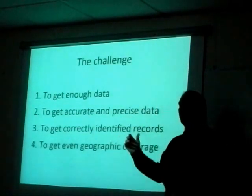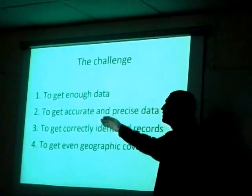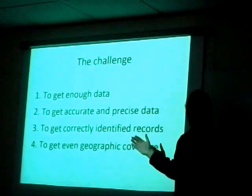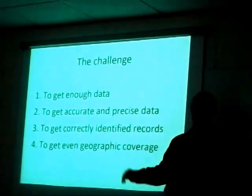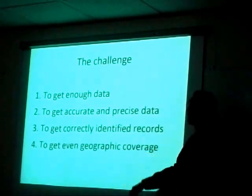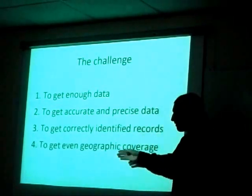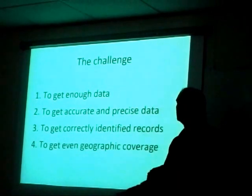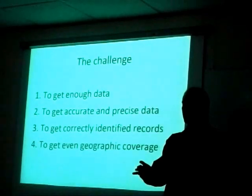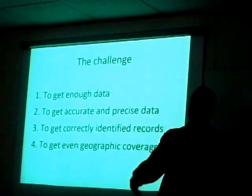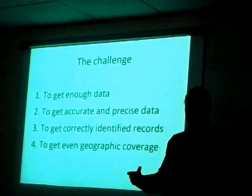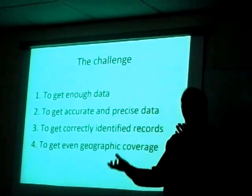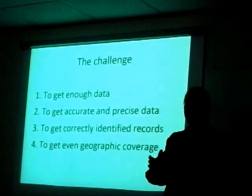There's always this inherent conflict whenever we do modeling: we want as much data as possible, but we want it to be accurate, precise, and correct. By just throwing as much data in as possible, we increase the chance of getting incorrect data. It's important to try to get even geographic coverage. We can fetch lots of records by going to GBIF and downloading that data, which shows where we've got gaps. Collect a lot, then filter it. There's always this conflict of wanting more data but also wanting good data.